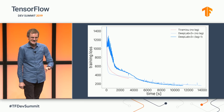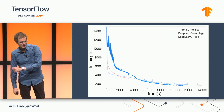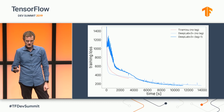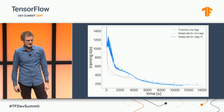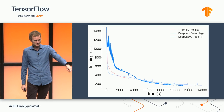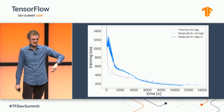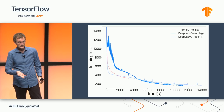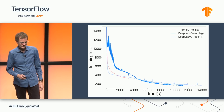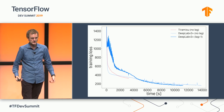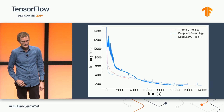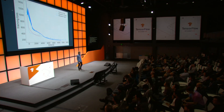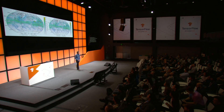Looking at the training loss, the lagged asynchronous version is initially a bit unstable — the training loss oscillates heavily at the beginning — but when you wait long enough it outperforms the non-lagged version. That's not true for every arbitrary deep learning network, but for us it's definitely true and worth trying for problems like this.